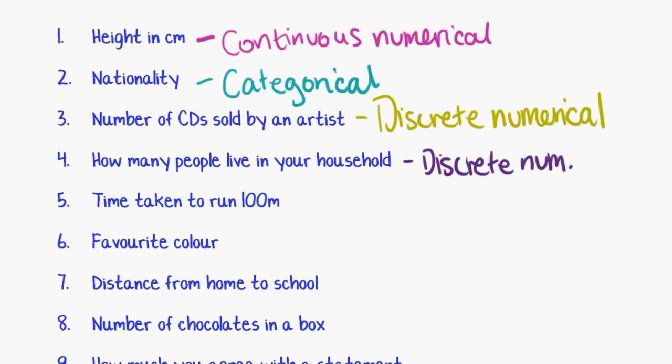And number five, time taken to run 100 meters. Well, Usain Bolt runs the 100 meters in about 10 seconds I think, 9.76 something, and they measure that very, very specifically. And depending on the technology, you could measure a time to many, many decimal places. So it's a number answer, which makes it numerical data. But you can give any great number of specifics in terms of a measurement of time. So that one is going to be continuous numerical.